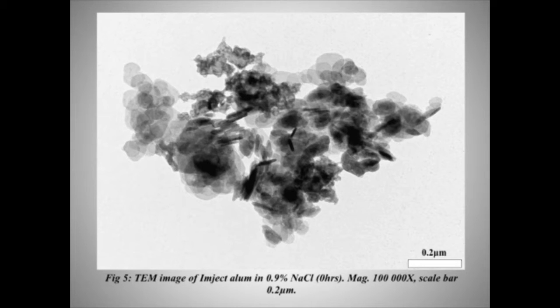Moving on to Imject Alum, this actually has two morphologies within it. The platy-like structures are highly crystalline brucite, so magnesium hydroxide, and there is also the aluminium hydroxycarbonate, which is a more amorphous phase. Imject Alum is in the order of about one micron and produces one-micron aggregates when formulated in sodium chloride.